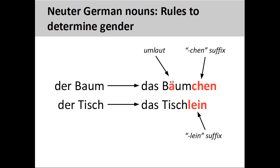All diminutive constructions will be neuter. Nouns in their diminutive form indicate a smaller version of something or communicate informality, cuteness, or affection. To turn a noun into its diminutive form, you add the suffix '-chen' or '-lein' to the noun and, if possible, add an umlaut to the noun vowel. For example, 'Baum' (tree) becomes 'Bäumchen' (little tree), and 'Tisch' (table) becomes 'Tischlein' (little table).